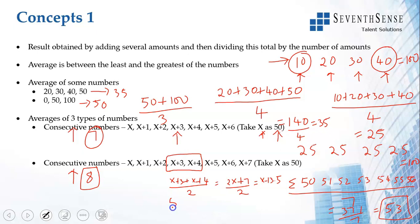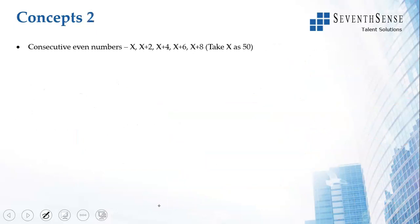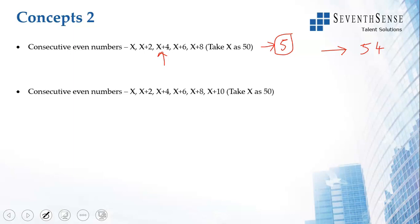For consecutive even numbers, the same rules apply. If the count is odd — say 5 numbers starting at 50: 50, 52, 54, 56, 58 — the average is the middle number, which is 54 (i.e., x+4). If the count is even — say 6 consecutive even numbers — the average is the mean of the two middle numbers, x+4 and x+6, giving x+5, so the answer is 55.